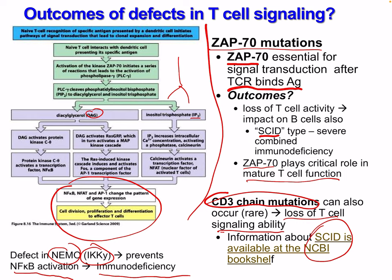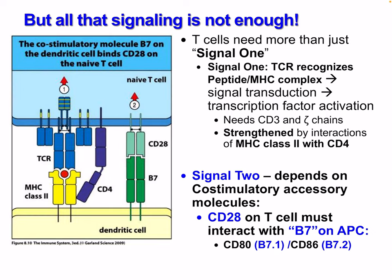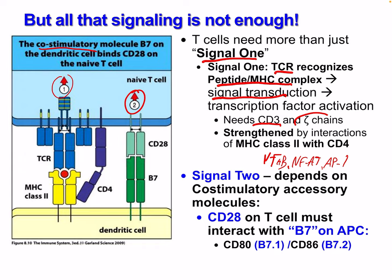That's not enough for full T cell activation — signal 1 is all the stuff we discussed with transcription factors, but we need a second signal: the co-stimulatory signal. T cells need more than just signal 1. Signal 1 is where the T cell receptor recognizes the peptide-MHC complex, with signal transduction and transcription factor activation through NF-κB, NFAT, and AP1. This needs our CD3 and Zeta chains and is strengthened by interactions of MHC class 2 with CD4. Signal 2 depends on co-stimulatory accessory molecules.